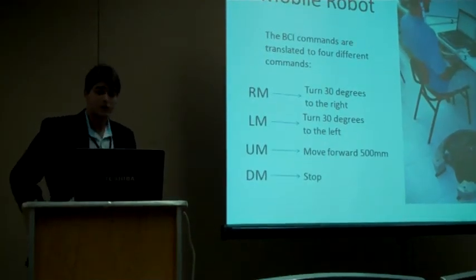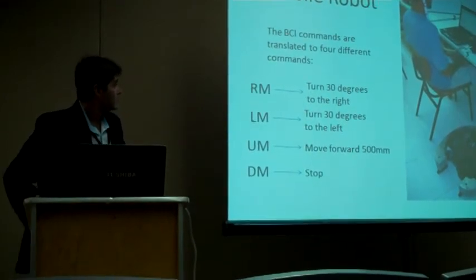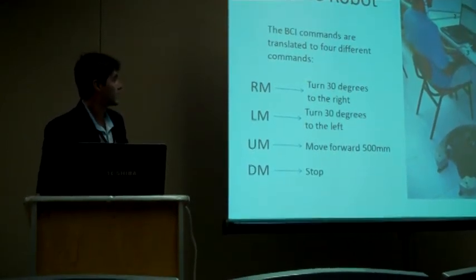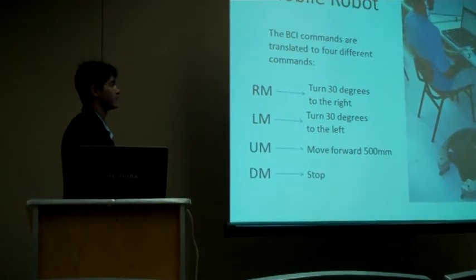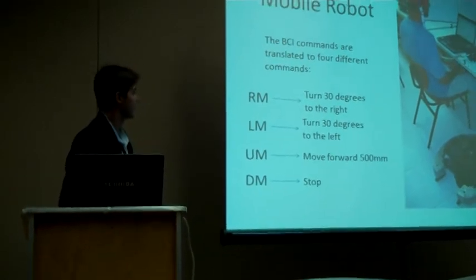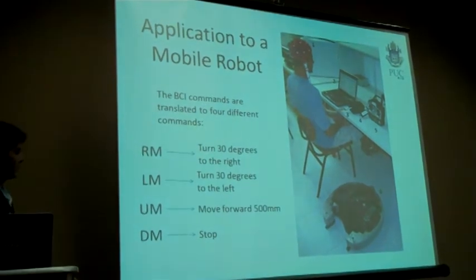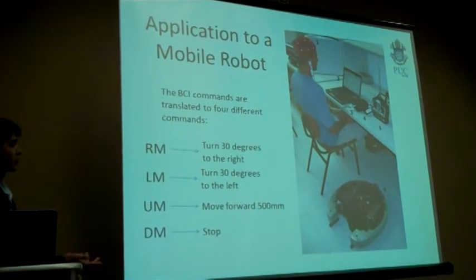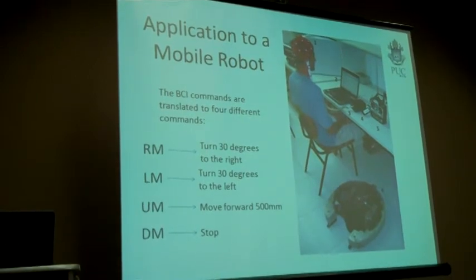To apply the system to a robot, these four patterns are translated into robot functions. The right movement is translated as making the robot turn 30 degrees to the right. The left movement makes the robot turn 30 degrees to the left. The up movement makes the robot move forward a half meter. And the down movement makes the robot stop.